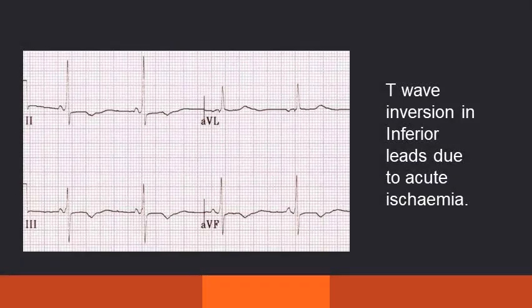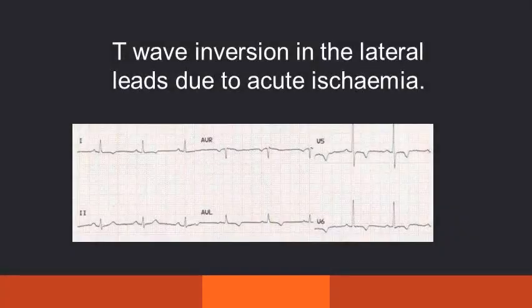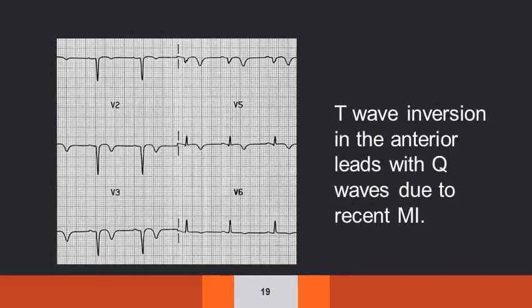In this ECG, T wave inversion is seen in inferior leads — leads 2, 3, and AVF — indicating inferior wall infarction. Here, T wave inversion in the lateral leads is due to ischemia in the lateral wall infarction. And T wave inversion in the anterior leads with Q waves is due to recent myocardial infarction.